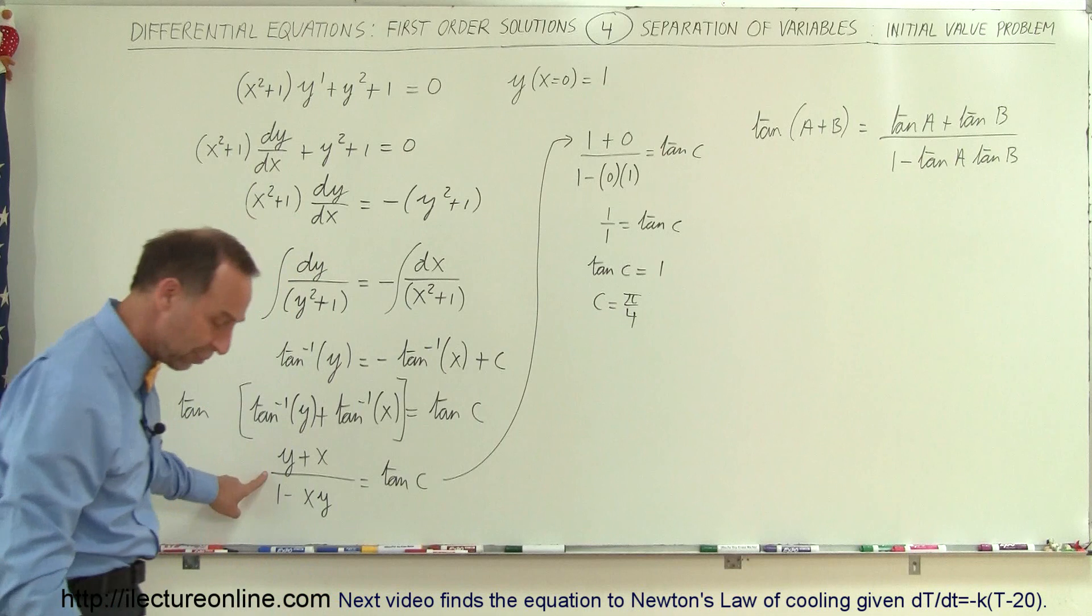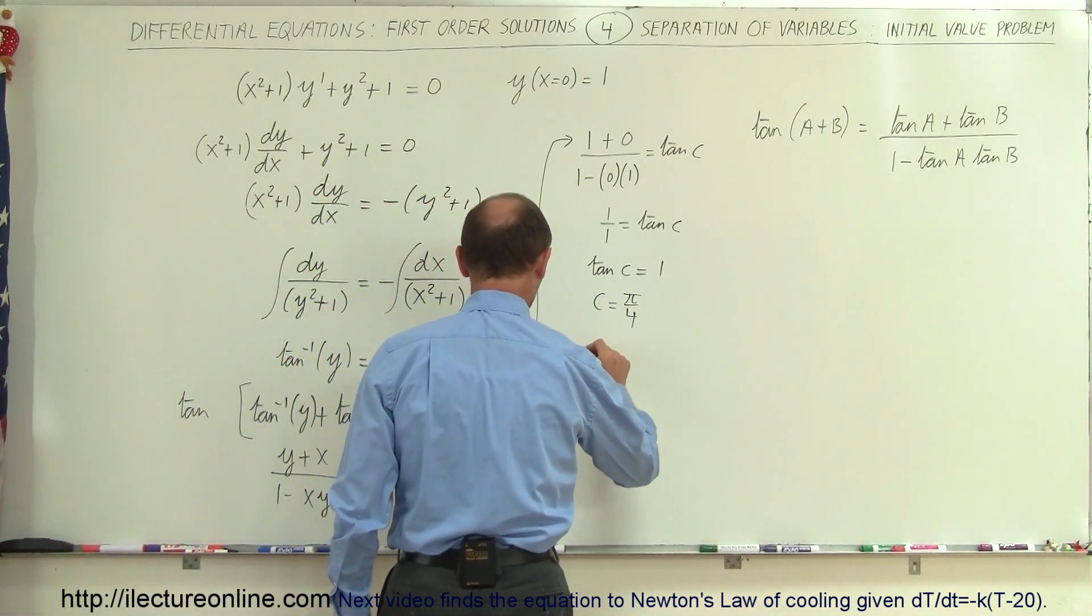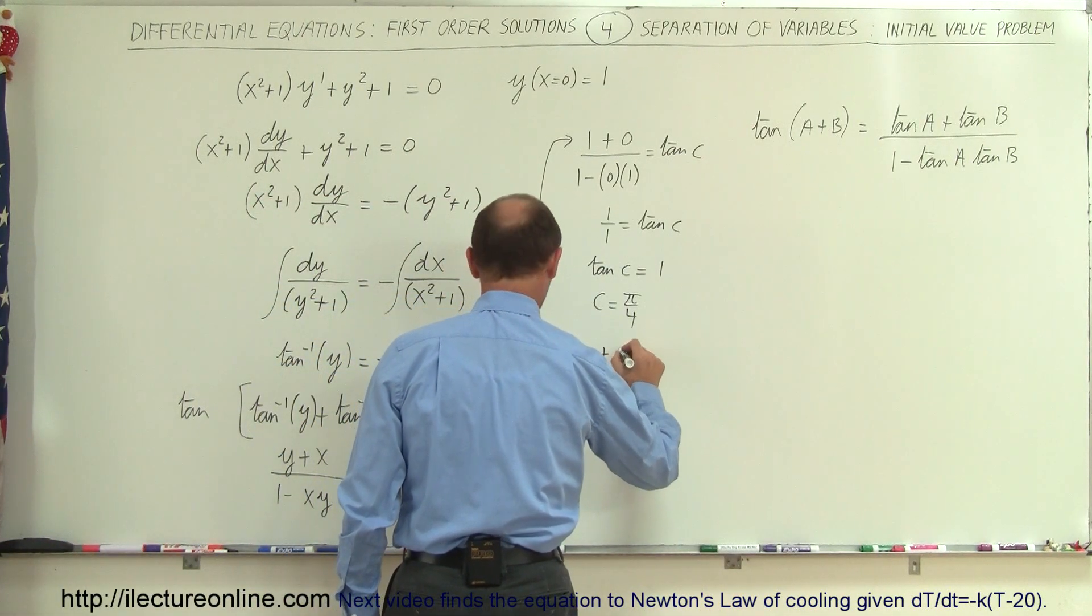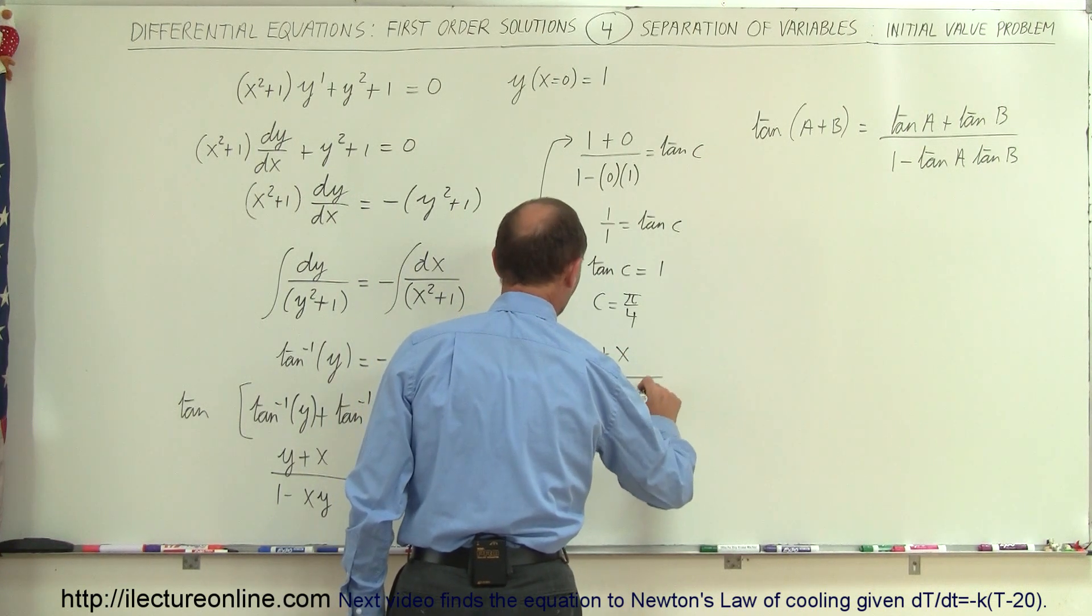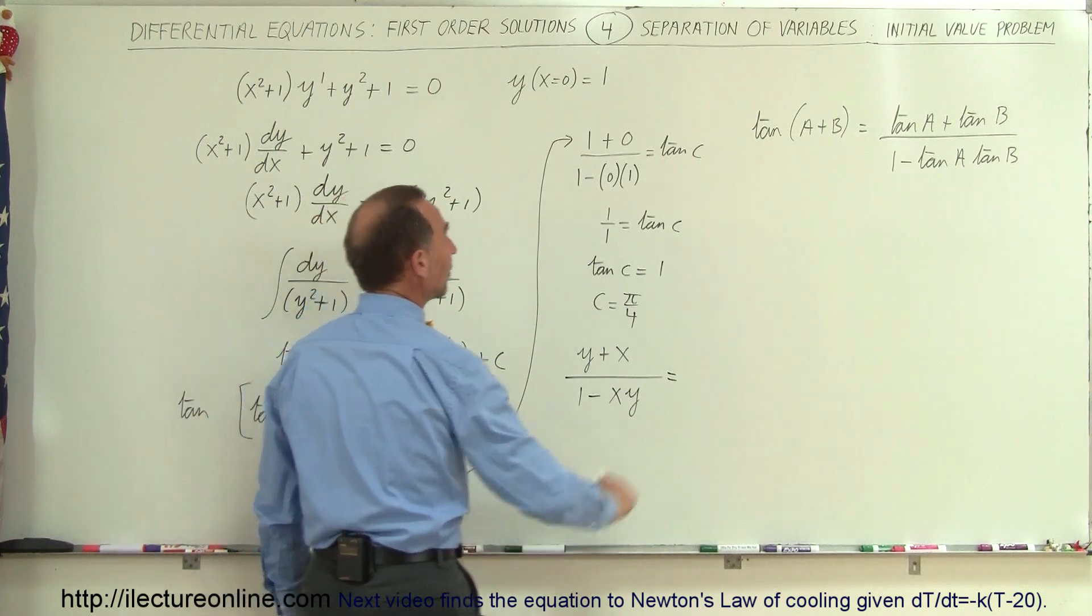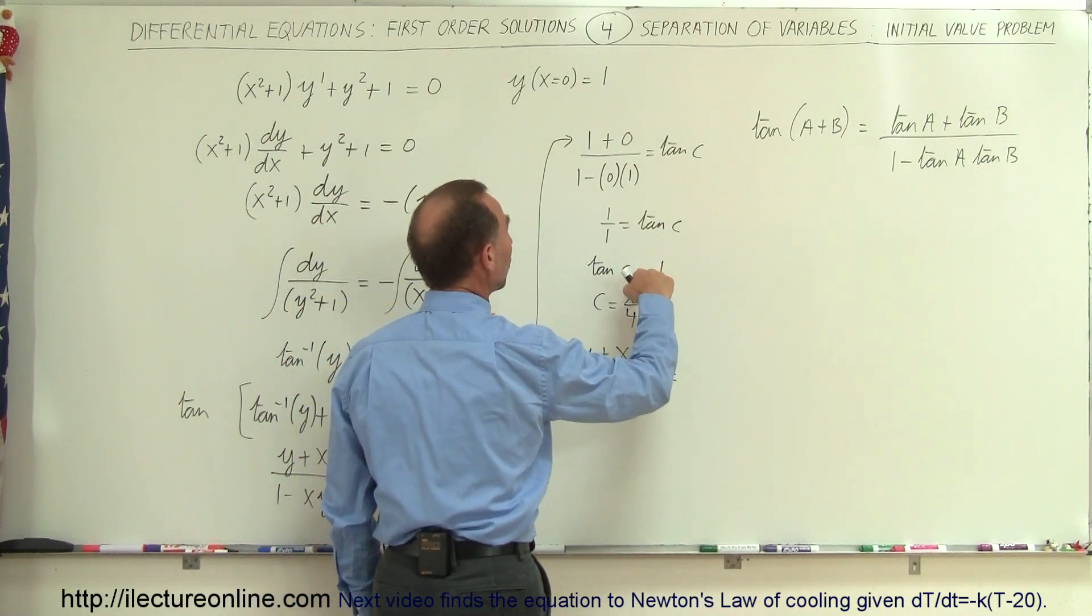So I'm going to go back to this equation right here. So therefore I can say that (y + x)/(1 - xy) = tan(c) and tan(c) = 1.